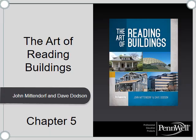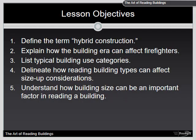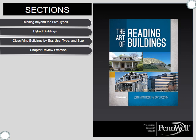On to Chapter 5. Our objectives for this chapter: one, define the term hybrid construction; two, explain how the building era can affect firefighters; three, list typical building use categories; four, delineate how reading building types can affect size-up considerations; and five, understand how building size can be an important factor in reading a building. In this chapter we're going to look at three categories: first, thinking beyond the five types — referring to the different five types of building construction covered in Chapter 4 as related to NFPA; next, what is a hybrid building; and then really the main focus in this chapter is classifying buildings by era, use, type, and size.